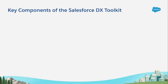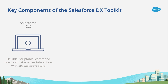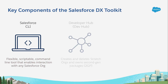So, what's in the toolkit? There are really just three key components you should understand, starting with the Salesforce CLI. This is a command line tool that's flexible, scriptable, and even extendable, and it lets you interact with any Salesforce org that you've got a valid login for. It's also the gateway to services that support ALM workflows, like creating scratch orgs and building packages. To do that, the CLI works in concert with an org-based tool called the Developer Hub, or DevHub for short.